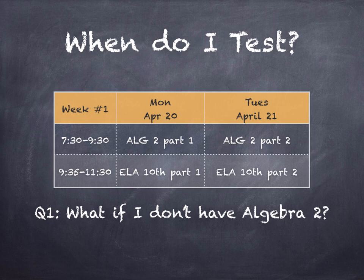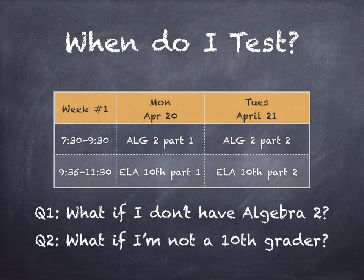So now you're probably wondering, what if I don't have Algebra 2? Then your options will be to either choose an academic review session or sign a permitted absence. The second question for this test date may be, what if I'm not a 10th grader? The same answer applies — you would either choose an academic review session for that time period or sign a permitted absence to not attend school during that time.